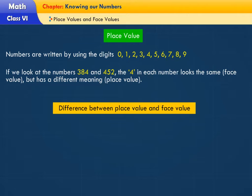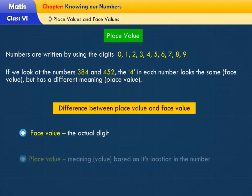Difference between place value and face value. Face value: the actual digit. Place value: meaning value based on its location in the number.